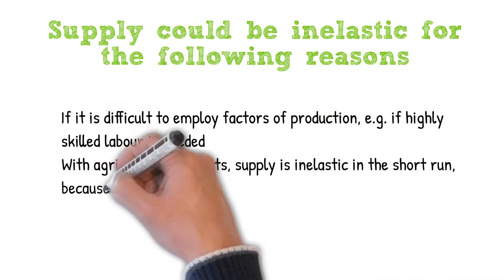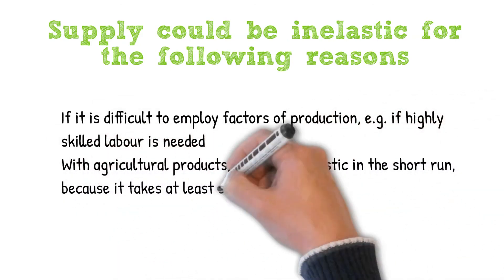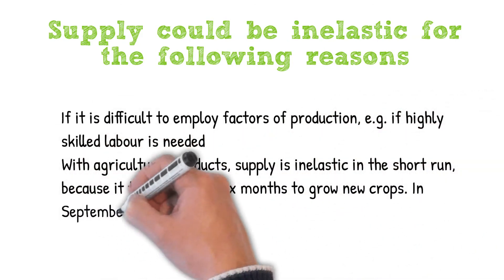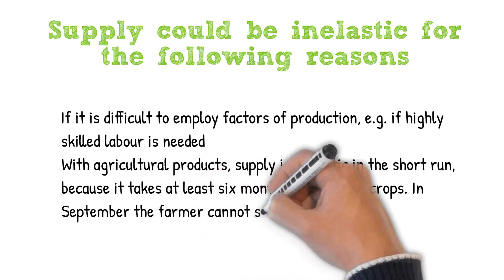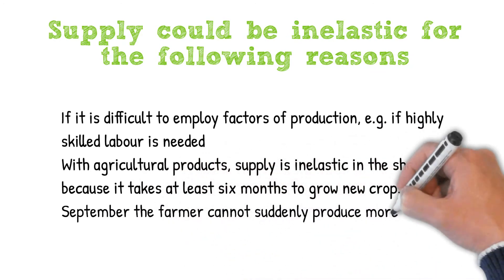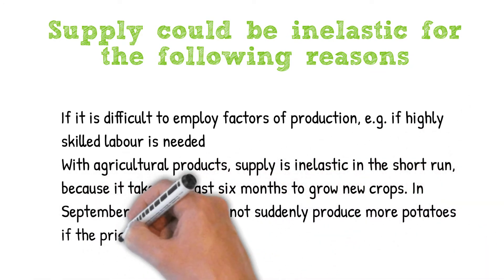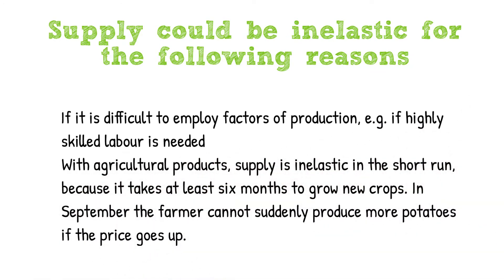With agricultural products, supply is inelastic in the short run because it takes at least six months to grow new crops. In September, the farmer can't magically produce more potatoes if the price goes up.